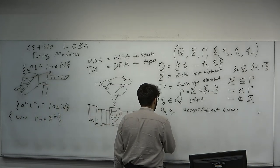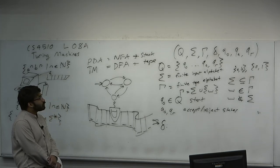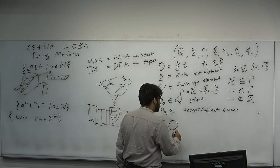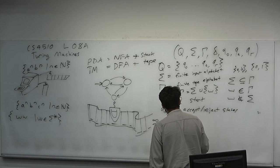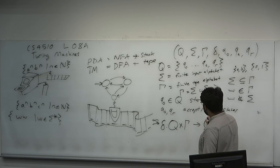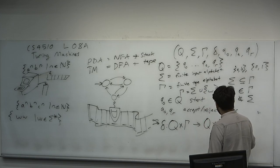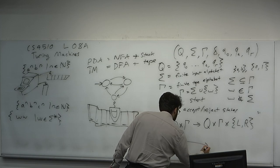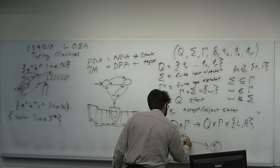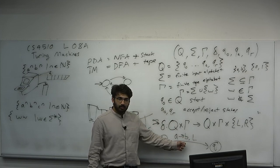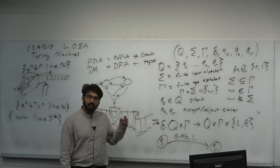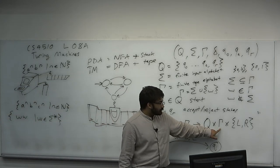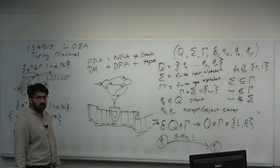The transition function delta is deterministic — no power set in the codomain. We start at some state, read a symbol off the tape, then transition states, write a symbol, and move left or right. So delta takes (state, symbol) and produces a triple (new state, symbol to write, direction). For example: from QI, reading a, write b, move left — this transition is taken if the tape head is over symbol a.